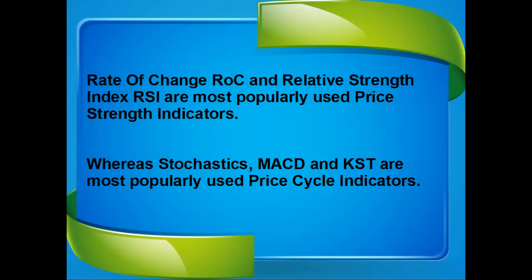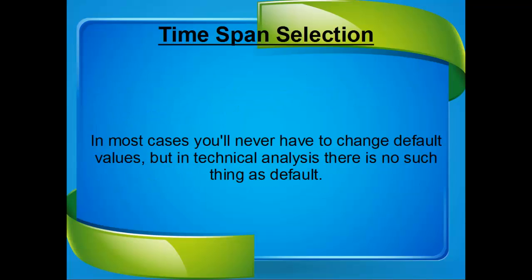Now we will take a look at a few characteristics of momentum indicators that are absolutely necessary for successful momentum analysis. The first is Time Span Selection. Almost all indicators are tested with different values, and the values that work with the majority are kept as default. In most cases you will never have to change default values, but in technical analysis there is no such thing as a fixed default — values have to be adjusted to get maximum consistency on signals. If you don't like adjusting values, then it's better to stick with RSI as the strength indicator and MACD as the price cycle indicator, as they hardly need any adjustments.